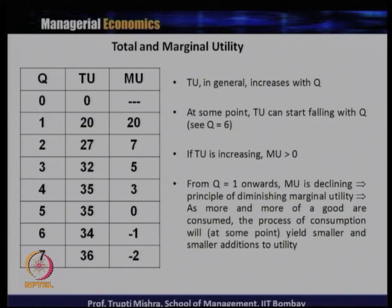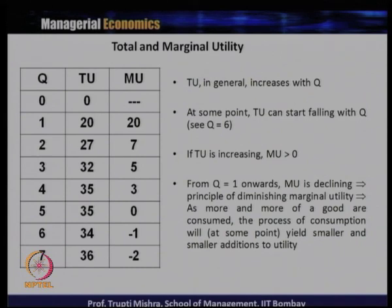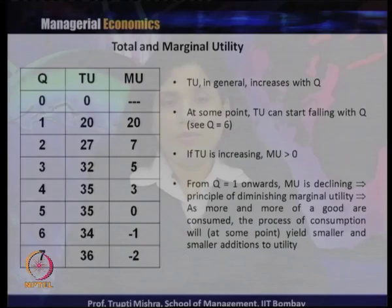From Q equals 1 onwards, marginal utility declines, which follows the principle of diminishing marginal utility. As more and more of a good is consumed, the process of consumption will at some point yield smaller and smaller additions to utility. In the second unit the additional utility is just 7 units — that is marginal utility. In the third unit the marginal utility is 5, fourth unit it is 3, fifth unit it becomes 0. In the case of 6th and 7th units, there is negative marginal utility — consuming more gives negative utility. This is evidence of the law of diminishing marginal utility.